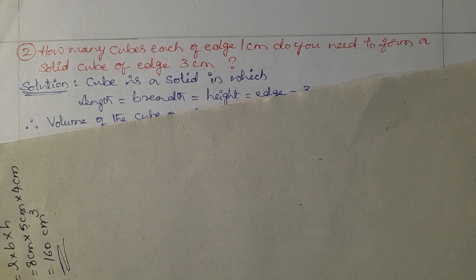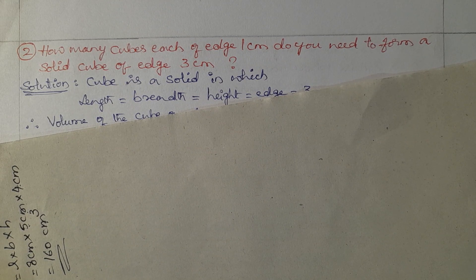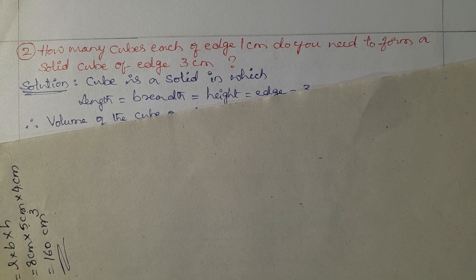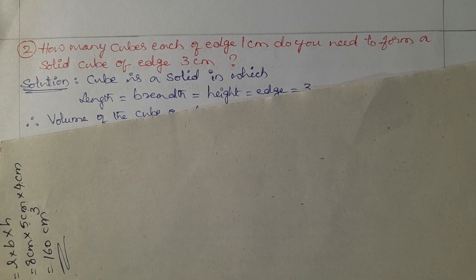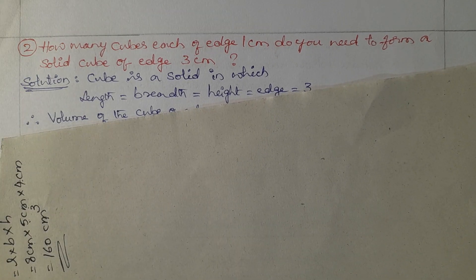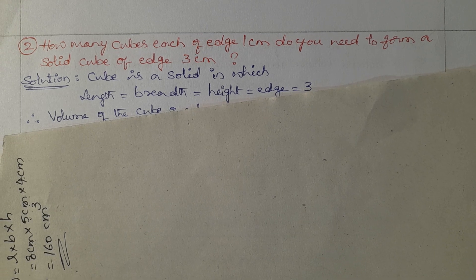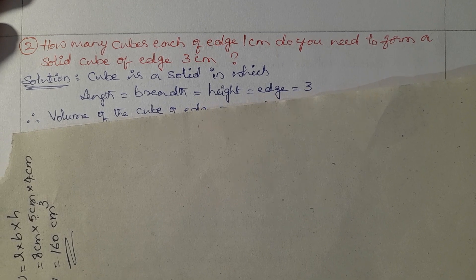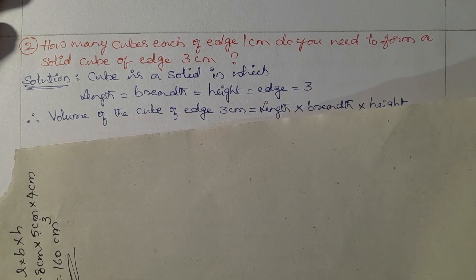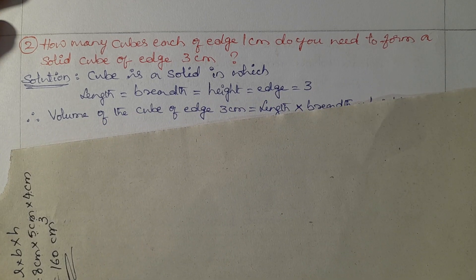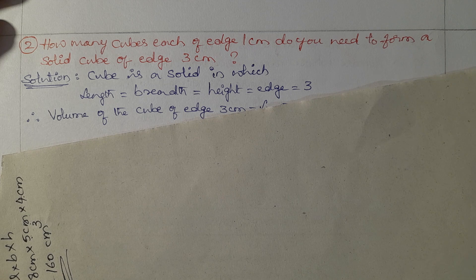Next question: how many cubes, each of edge 1 centimetre, do you need to form a solid cube of edge 3 centimetres? A cube is a solid in which length, breadth, and height — the edge — are all equal. Here, all edges are 3 centimetres.